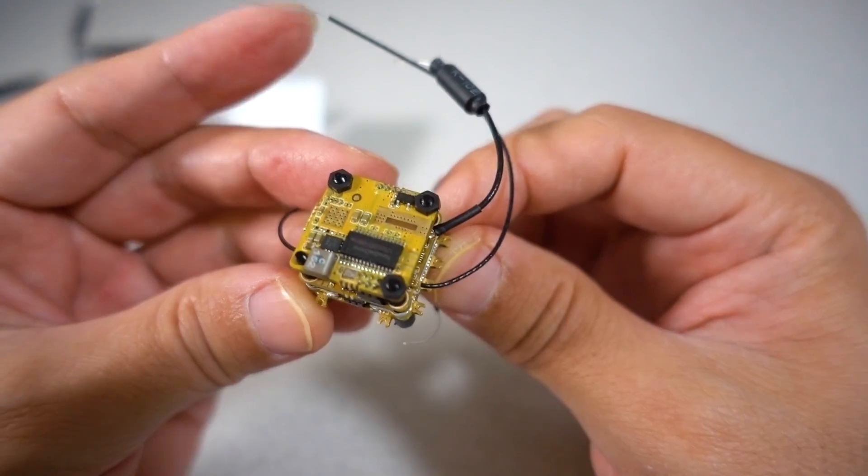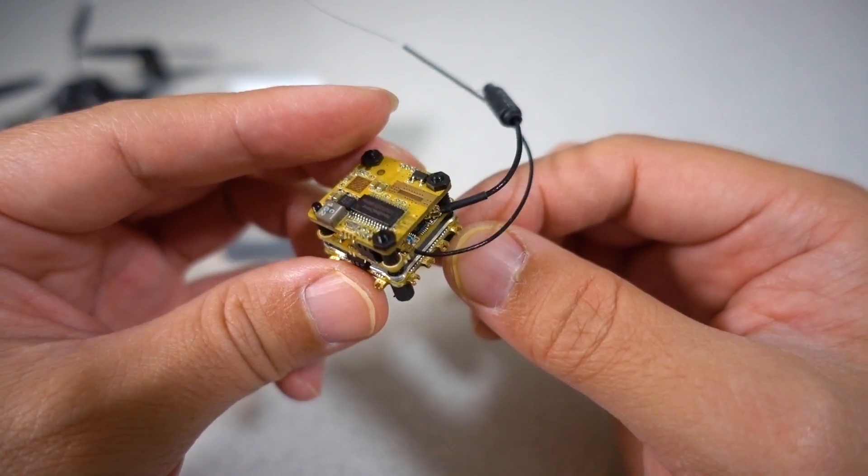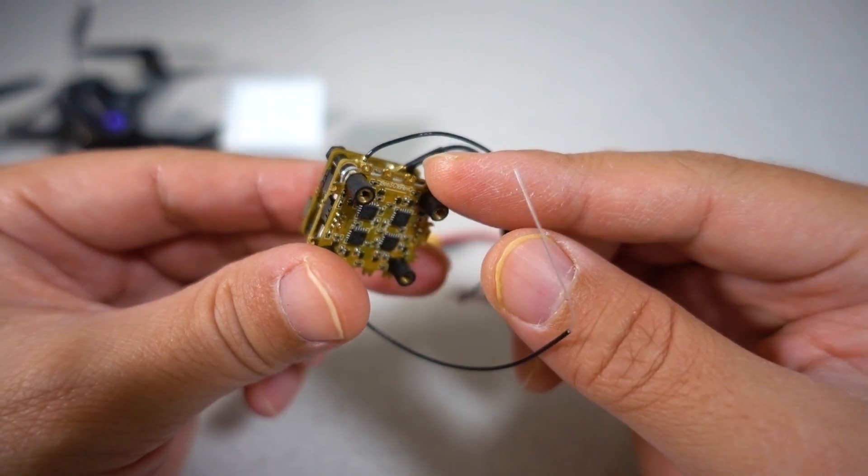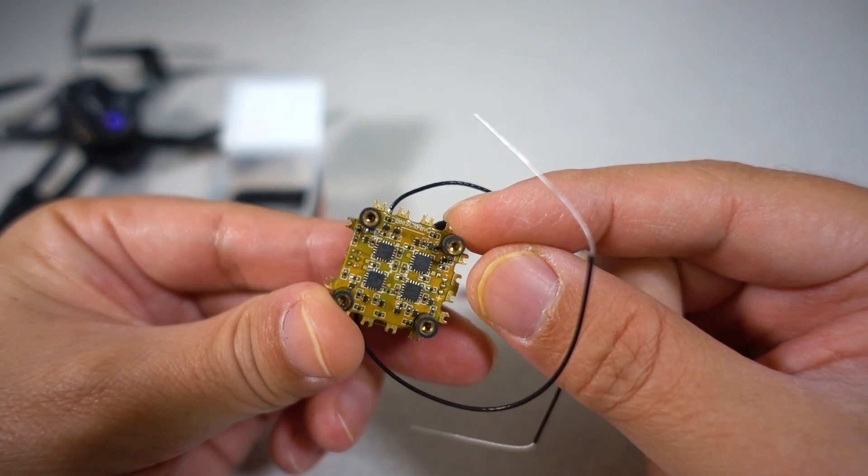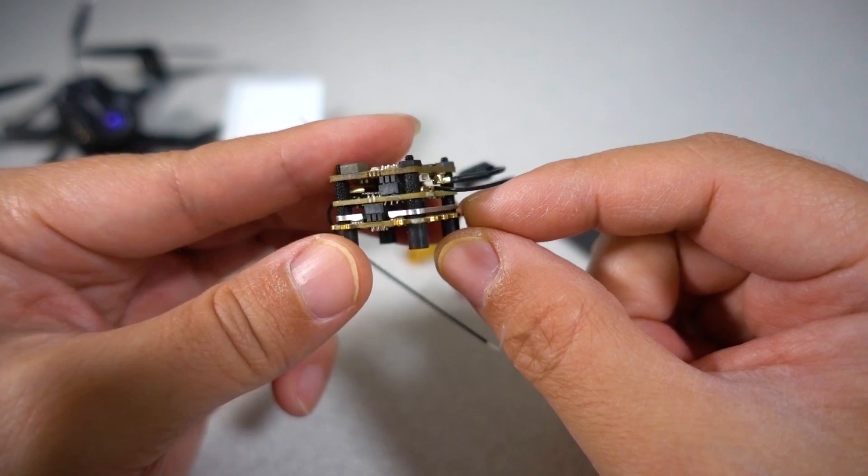So this is meant to be an all-in-one unit here, all together, I don't think it's meant for swapping parts out for other things. You have a 1-2S, a 4-in-1 ESC down here, basically it gets up to 12 amps on this one.